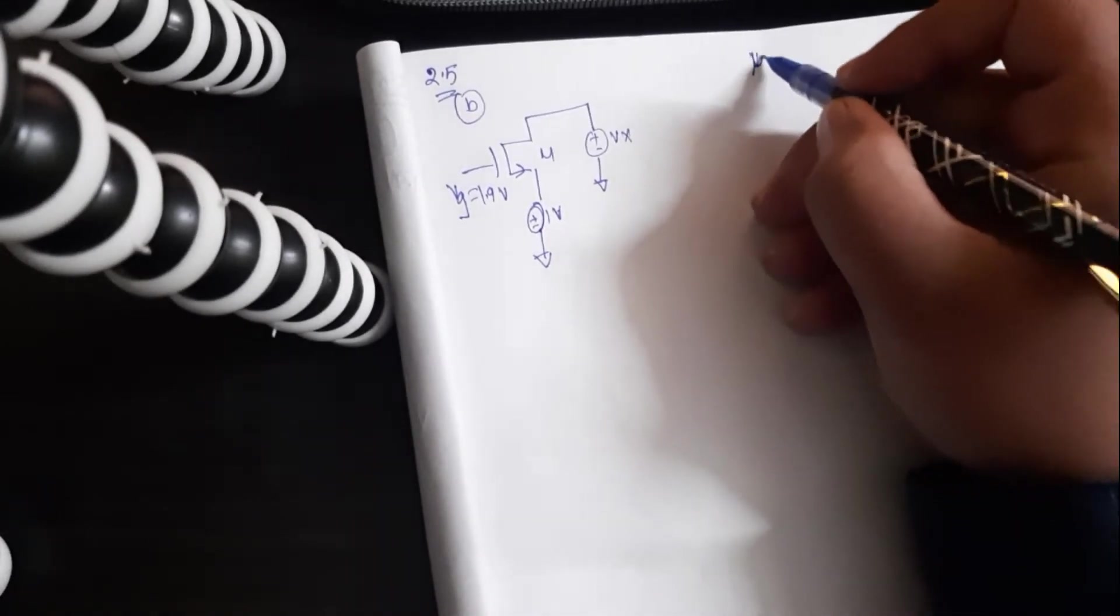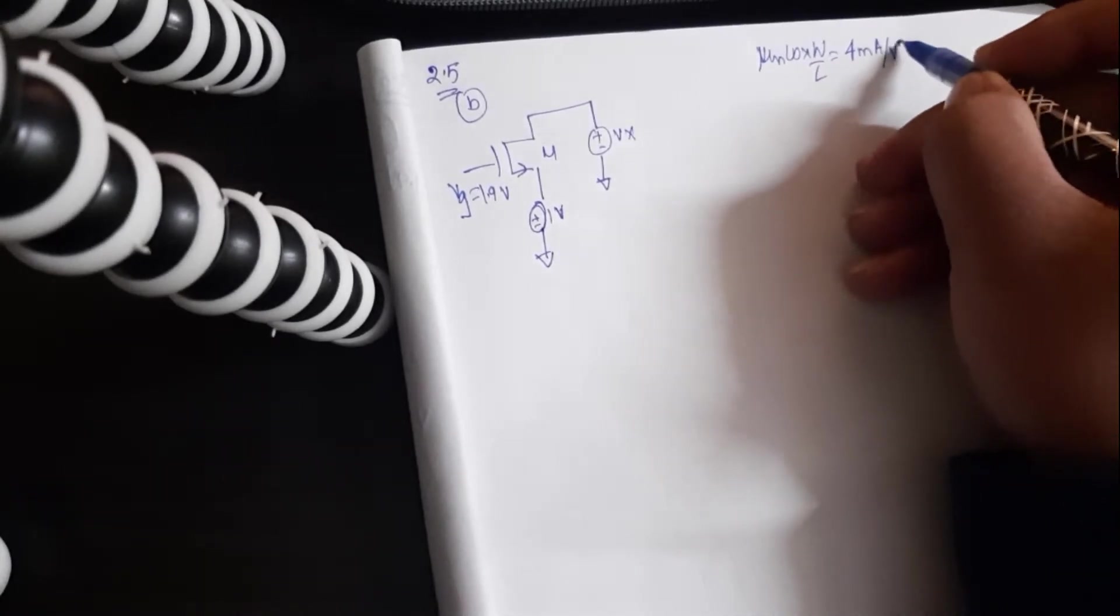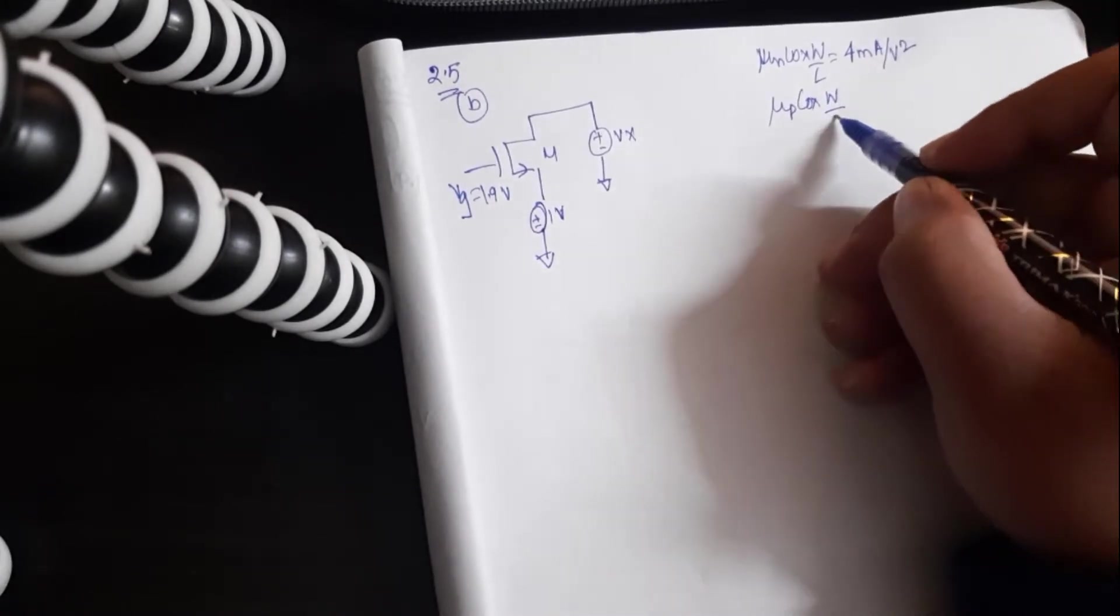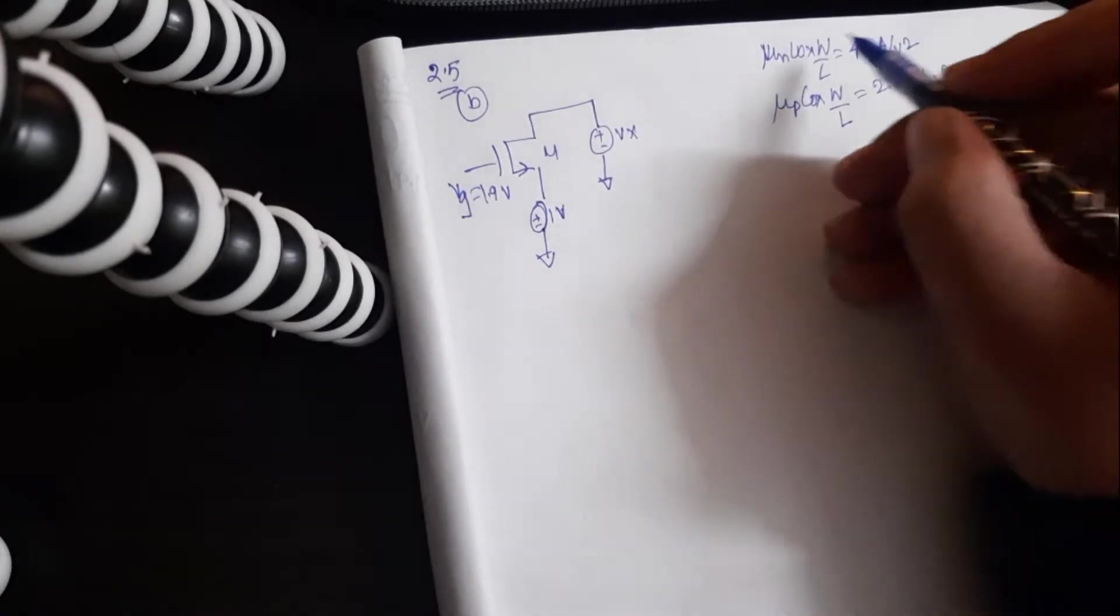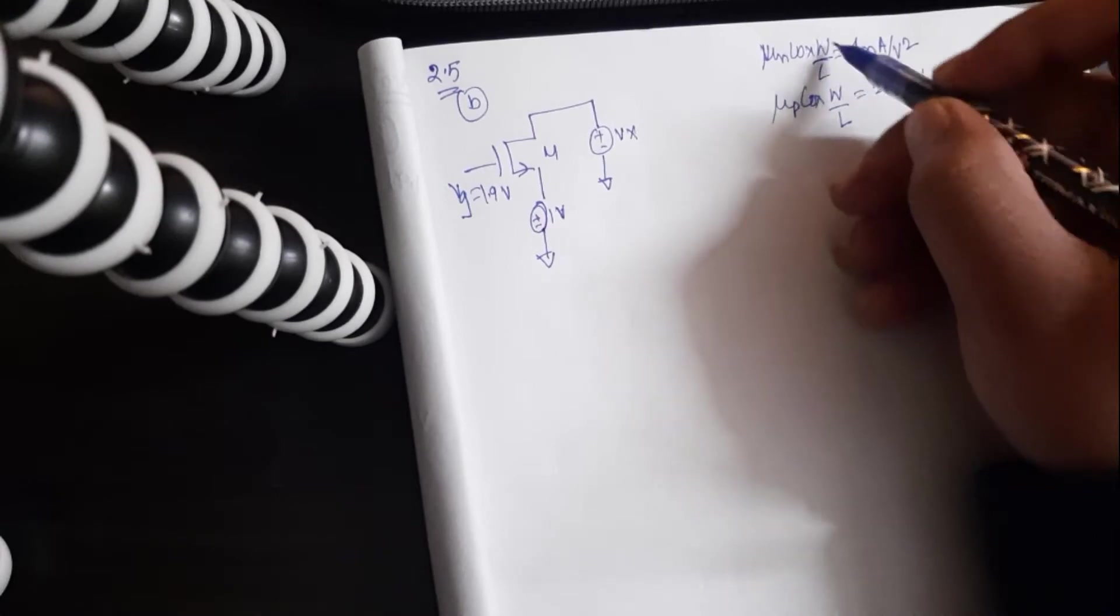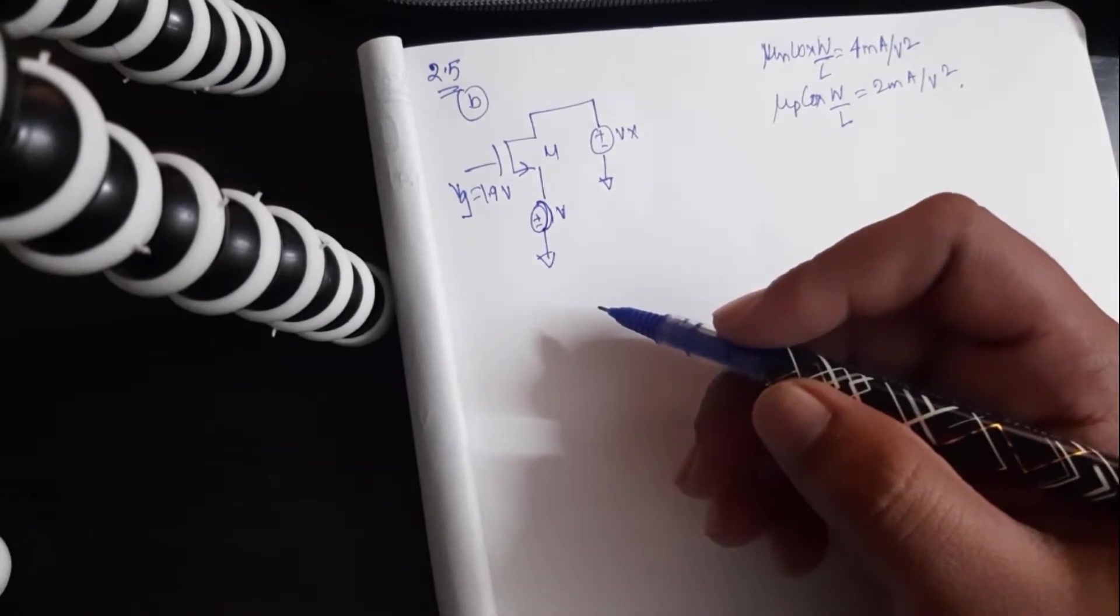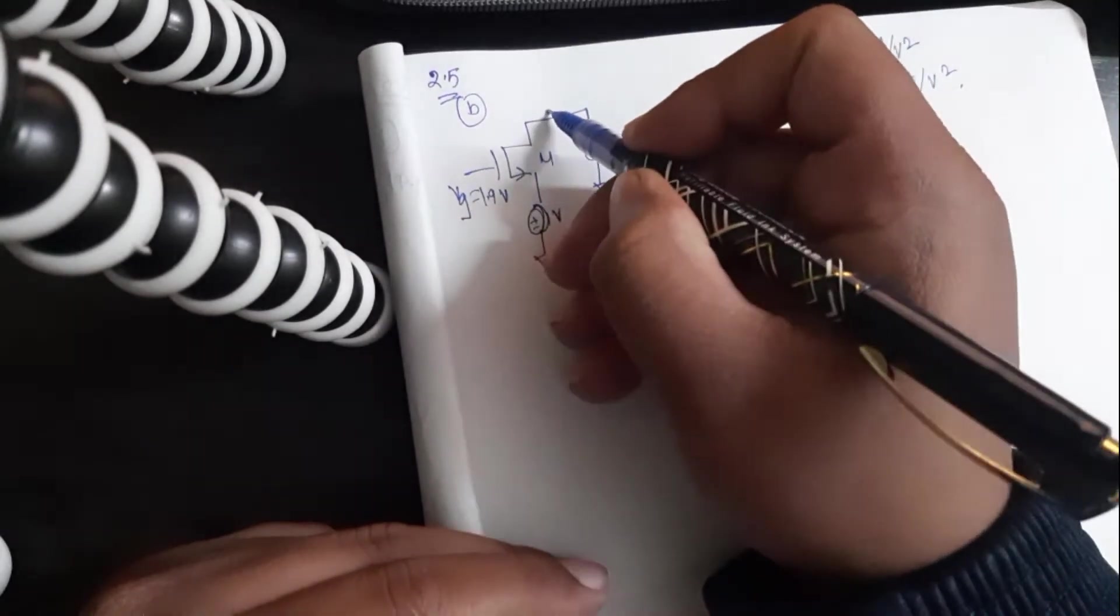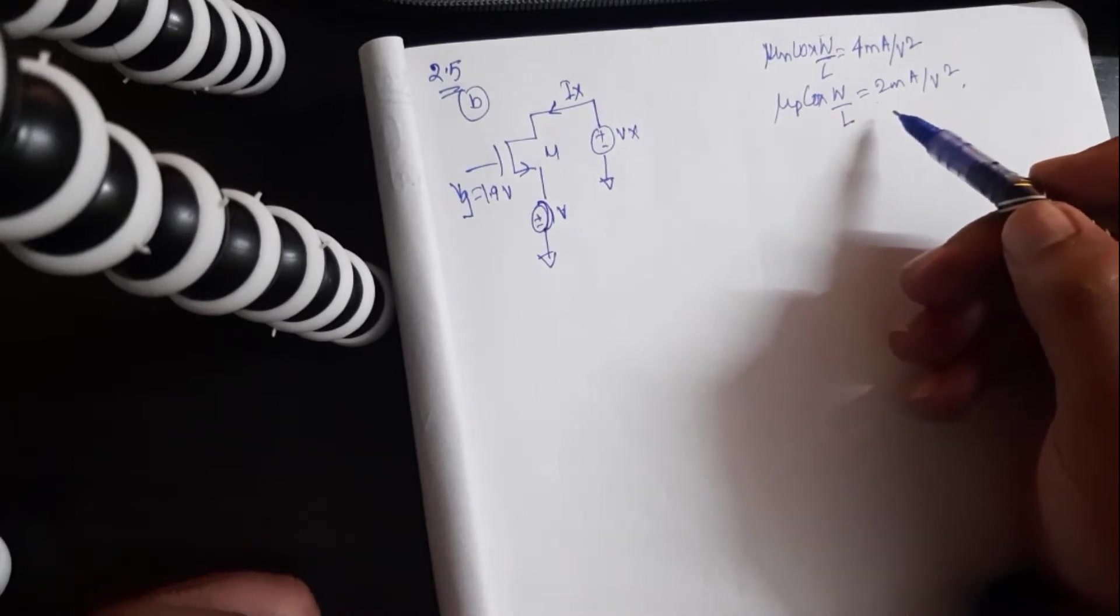First, let me consider some process parameters. I believe in the previous video I did not consider W by L but that's okay. You can just consider W by L to be 1. In these type of questions we are more concerned about the trend rather than the absolute values. So the values that I've taken here, these will be okay for demonstration purposes.